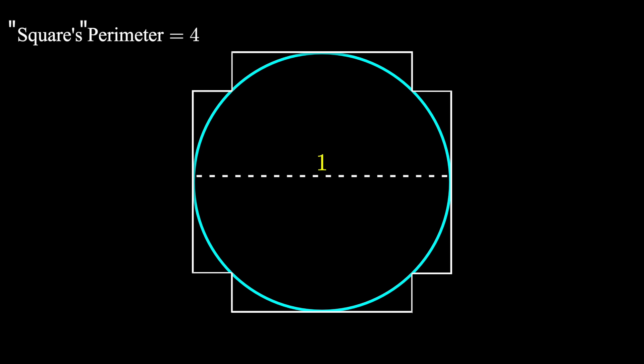If we keep removing the corners in this fashion, the perimeter of the shape around the circle is still 4. Repeat this out to infinity and we'll see that this process maps the shape onto the circumference of the circle.